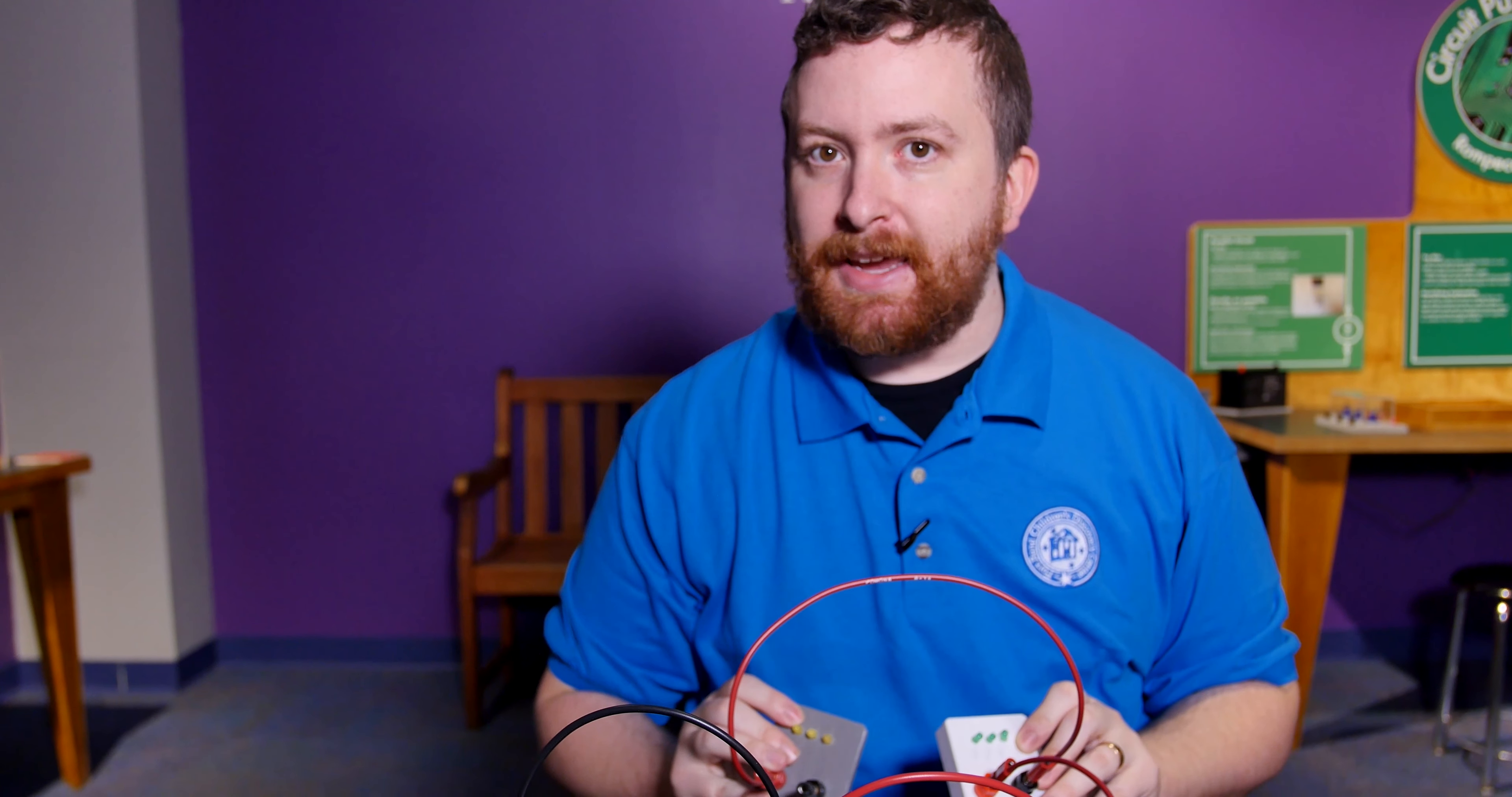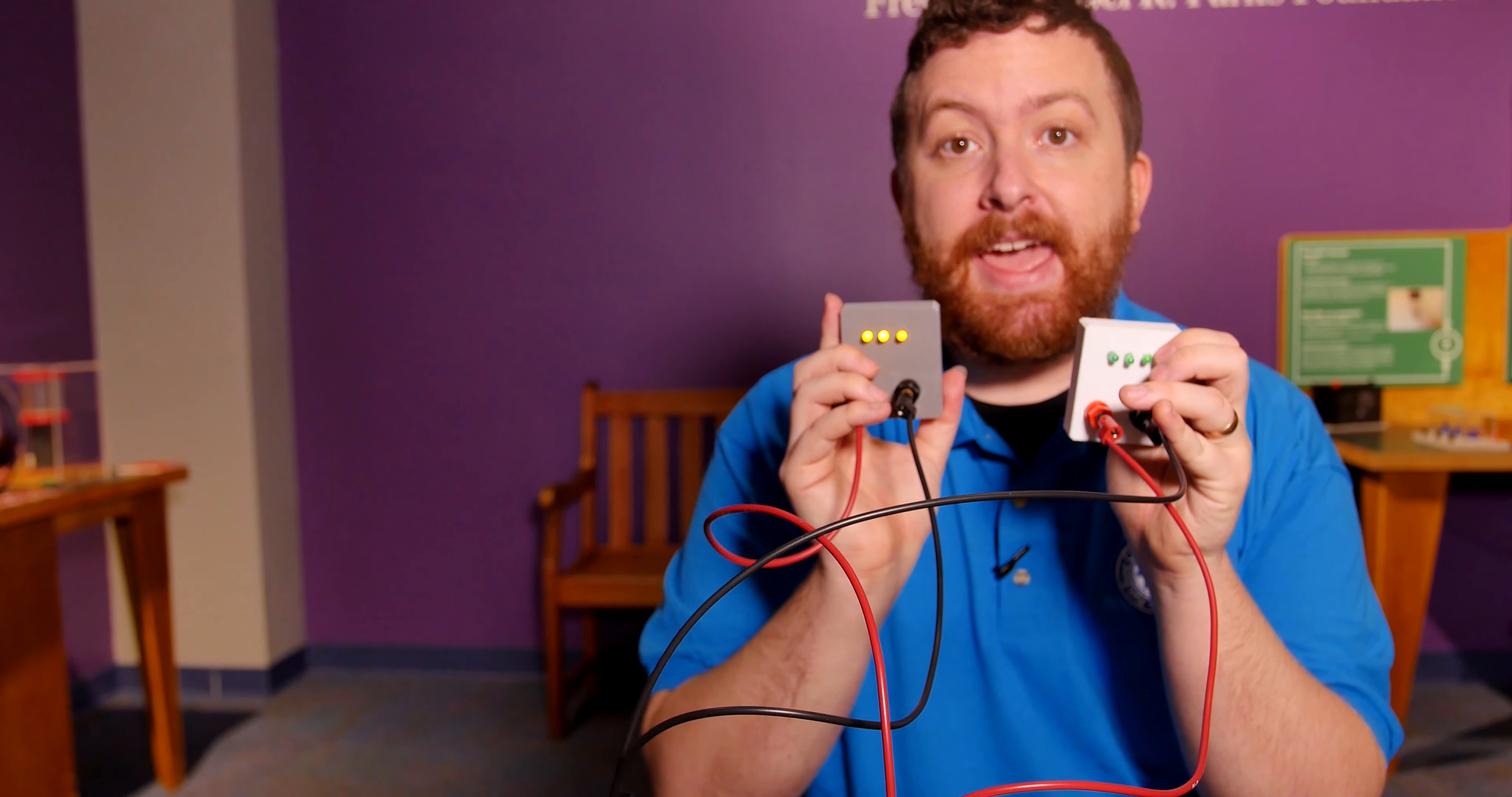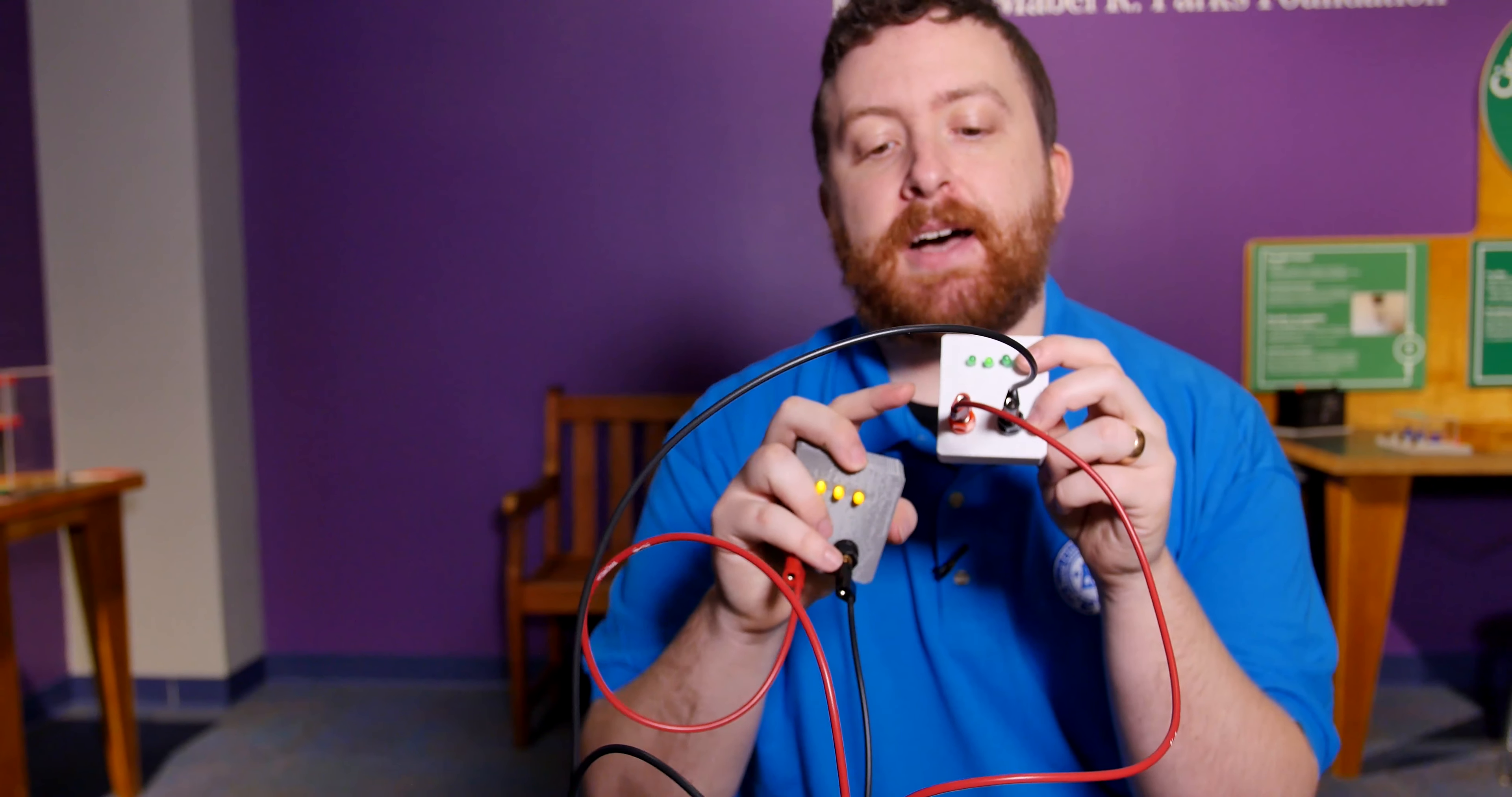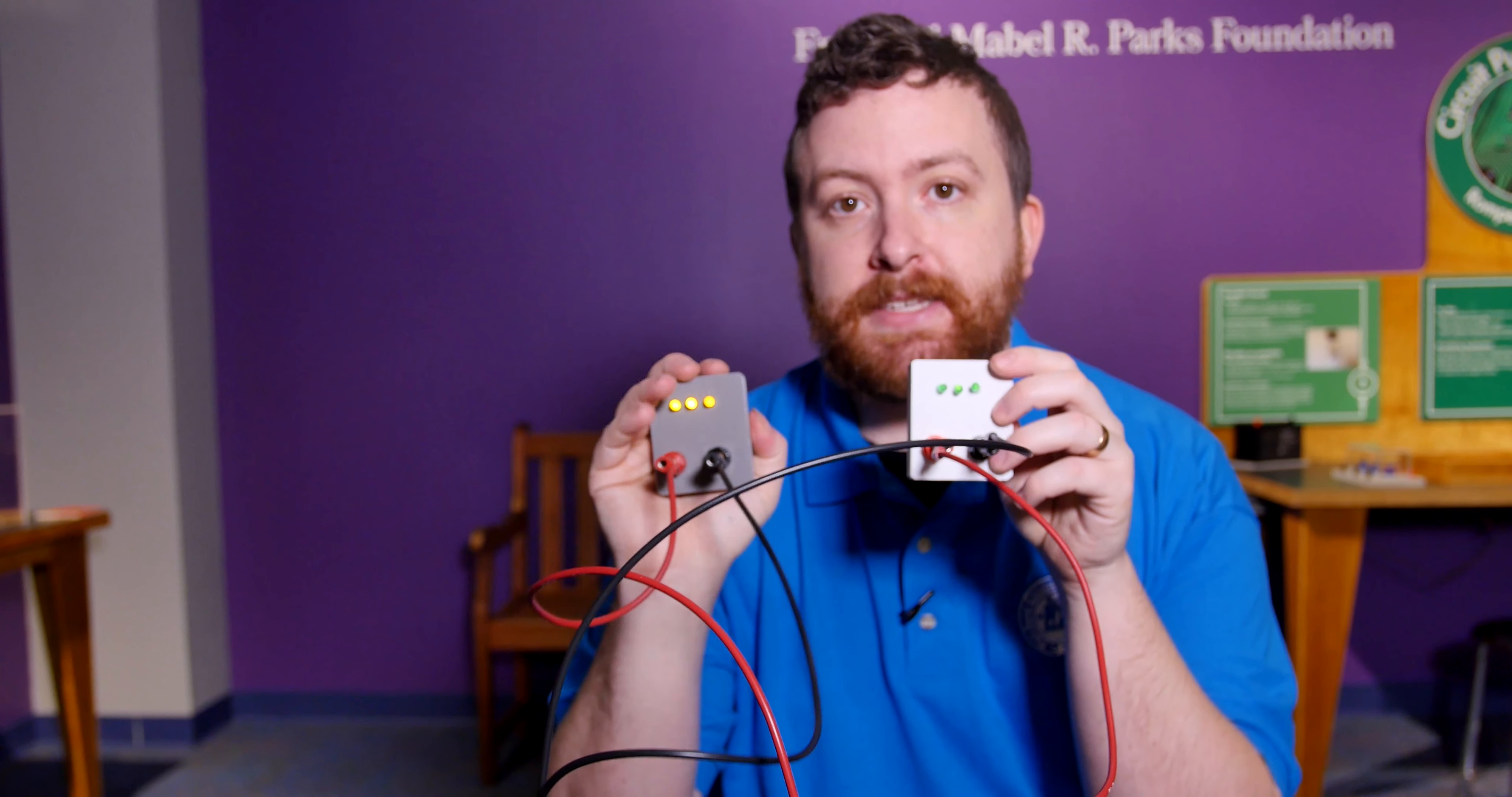Instead, we might want to make it a parallel circuit. So now I've made this into a parallel circuit. In a parallel circuit, I basically have two separate circuits. The battery has a positive wire coming in through this LED and then back into the battery from this LED, and then a totally separate positive wire into this LED and then back into the battery from this LED.